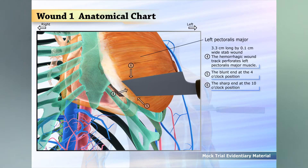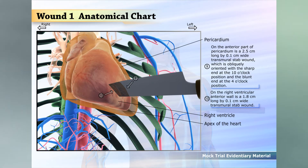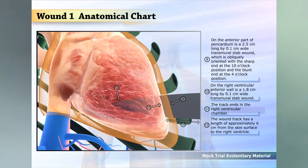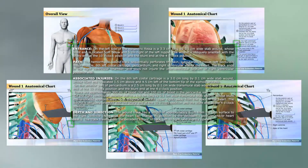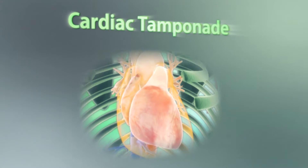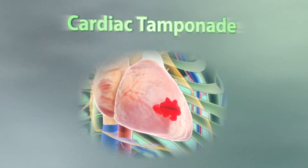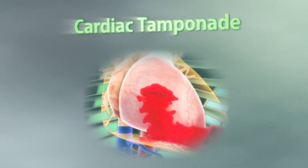Moreover, additional images, such as without the pectoral muscle, without bone and cartilage, and as a transparency, can be created that help explain the contents of this report. A medical animation can also be created, which makes it easy to understand exactly what damage was done to the heart by the stabbing.